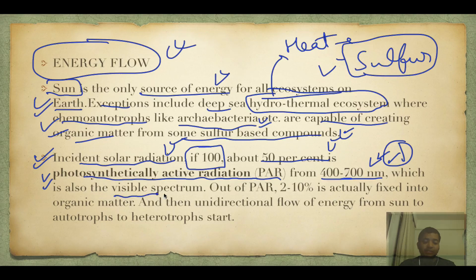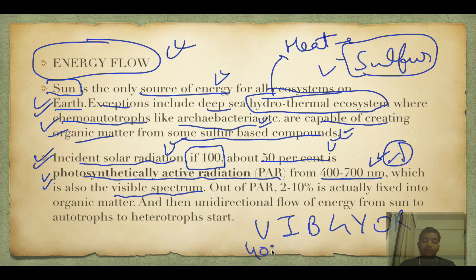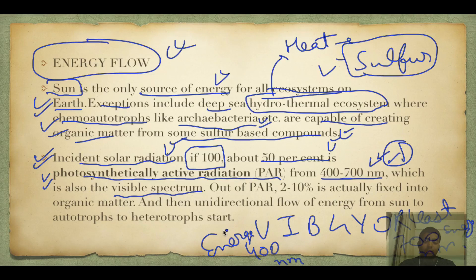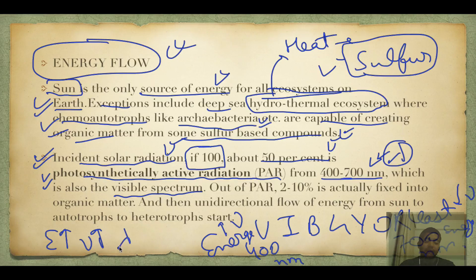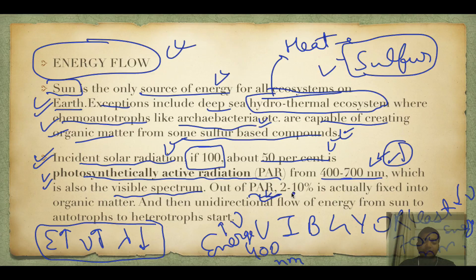The 400–700 nm range is also the visible spectrum — VIBGYOR — where violet is at 400 nm and red is at 700 nm. Violet is the most energetic with maximum frequency, and red is least energetic with minimum frequency. Energy increases as frequency increases and wavelength decreases. Out of total photosynthetically active radiation, only 2–10% is actually fixed into organic matter, and then unidirectional energy flow occurs from Sun to autotrophs to heterotrophs.